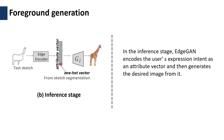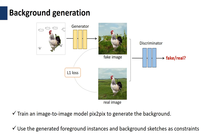We train PIX2PIX for background generation. Using the generated foreground instances as constraints allows the network to generate a more reasonable background.